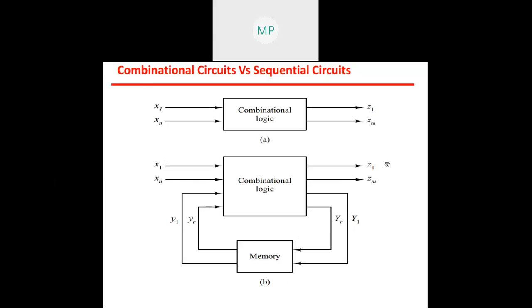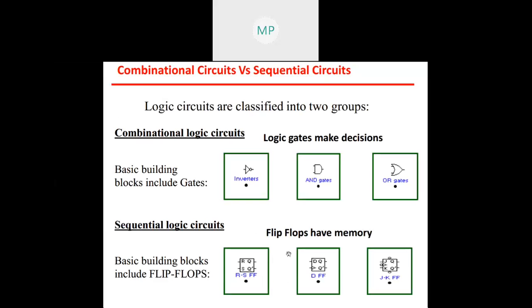The output of a sequential circuit depends on the present input and the previous output stored in the memory element. Combinational logic circuits have simple logic gates as their basic building blocks, while the basic building blocks of sequential logic circuits are flip-flops.